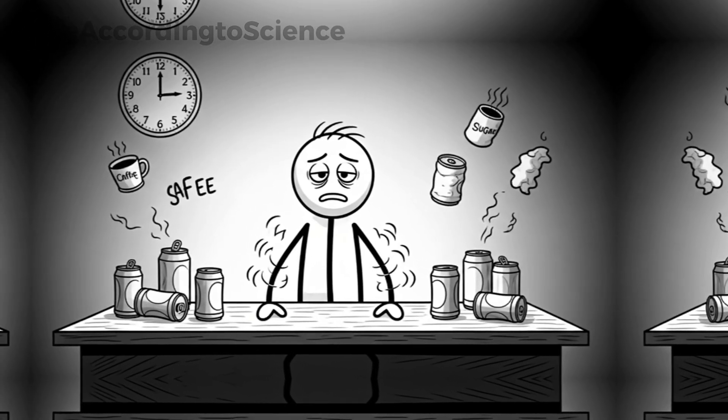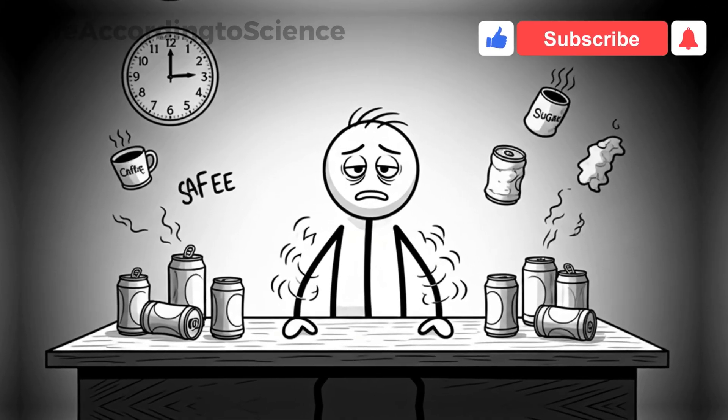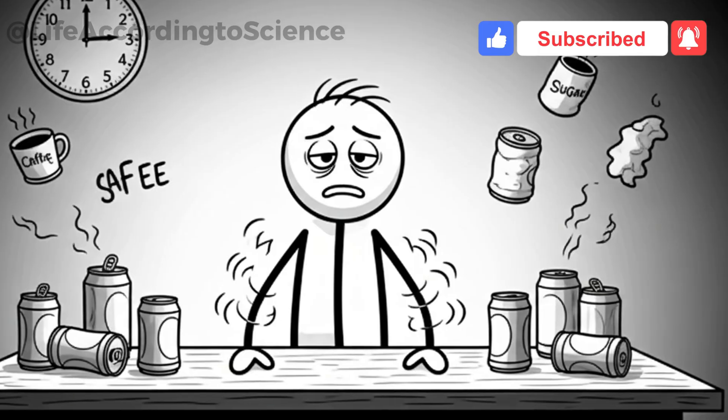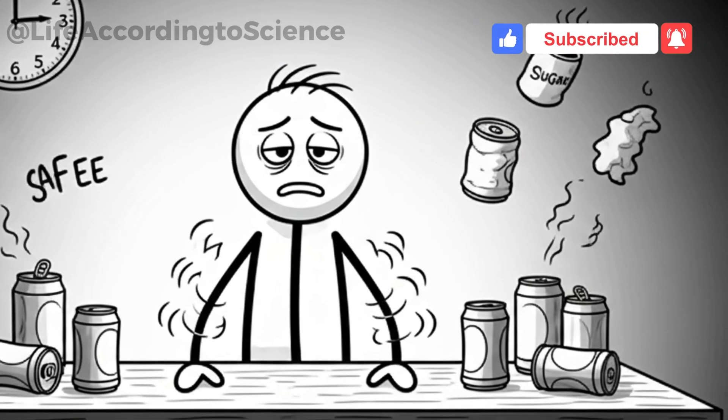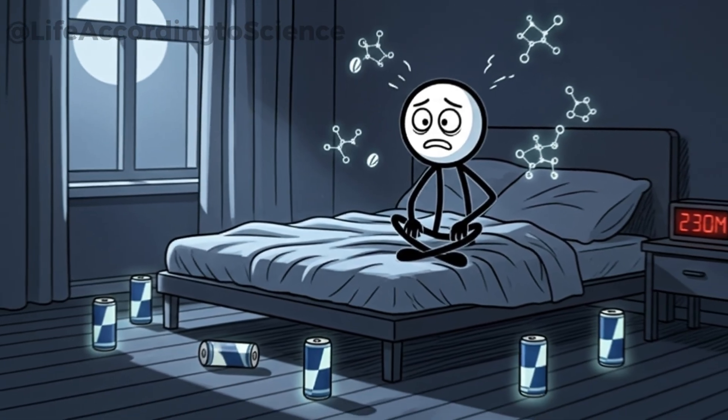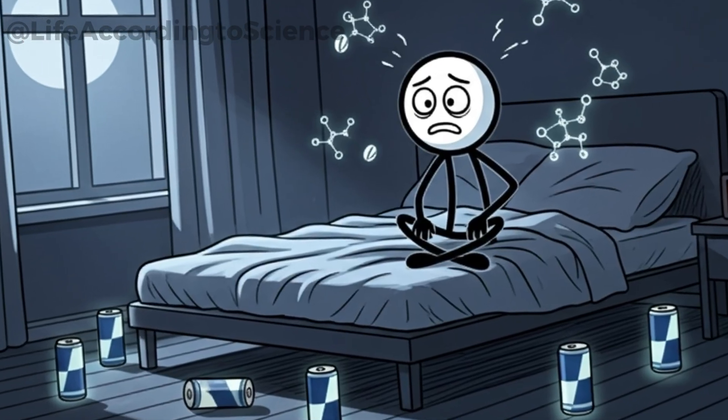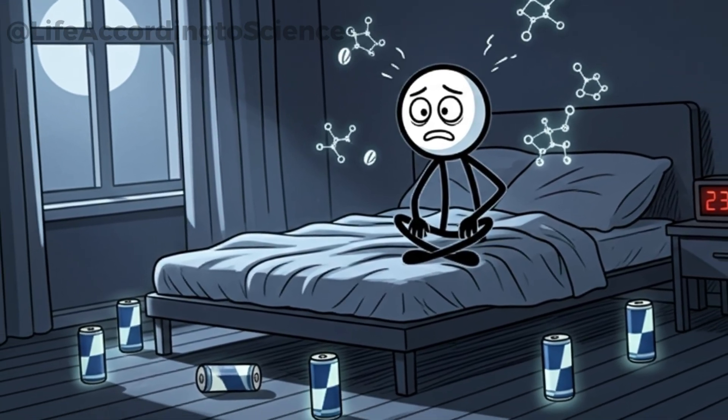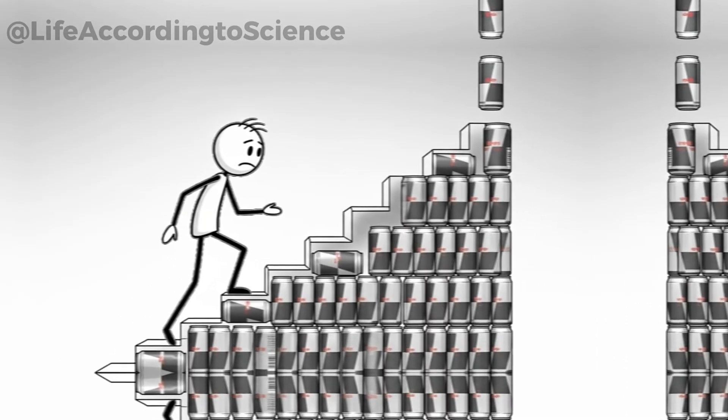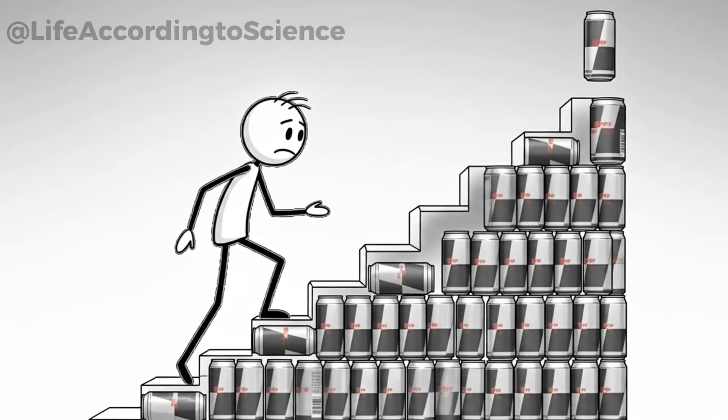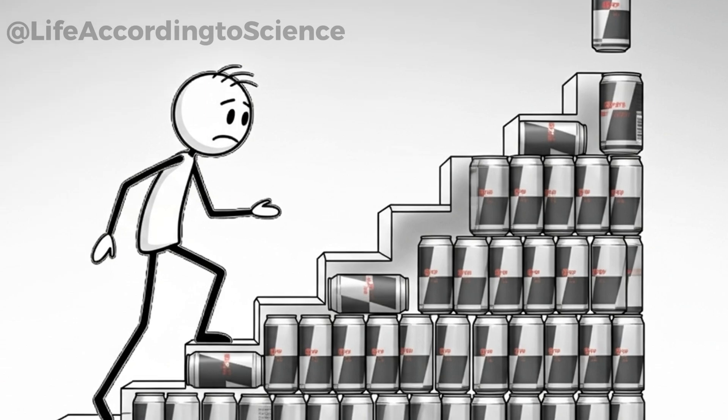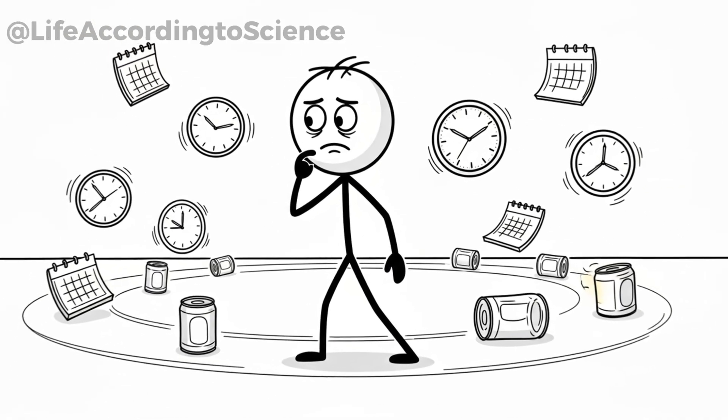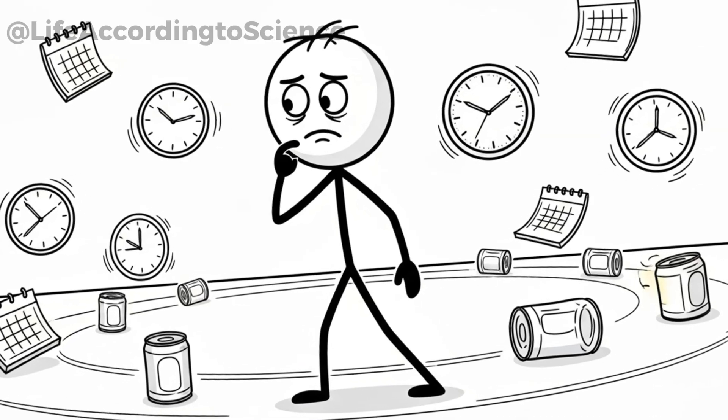By day 5 or 6, however, cracks begin to appear. The highs don't feel as high anymore, and you start noticing the lows—jitteriness, restlessness, and difficulty winding down at night. The more cans you drink, the more your body demands them just to maintain normal energy levels. So while the first few days might trick you into believing you've unlocked your hidden potential, the truth is, you're simply entering a cycle that's harder to break than you might expect.